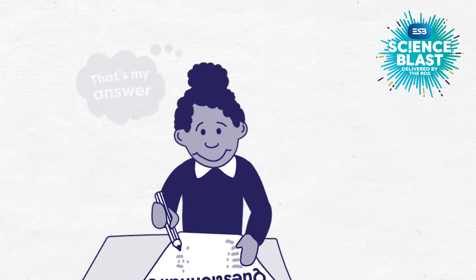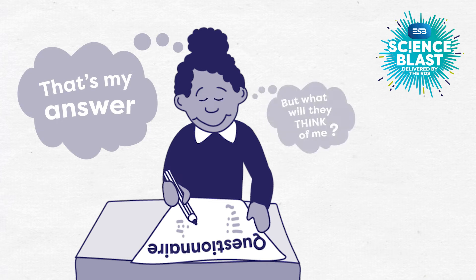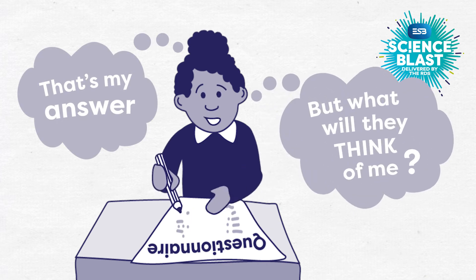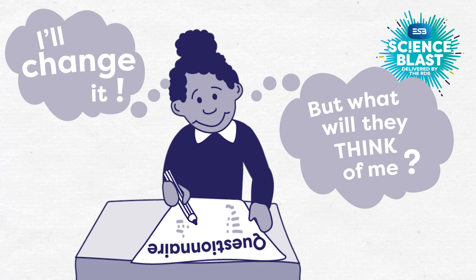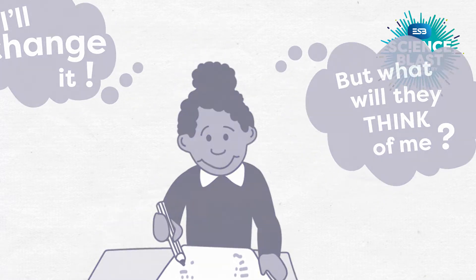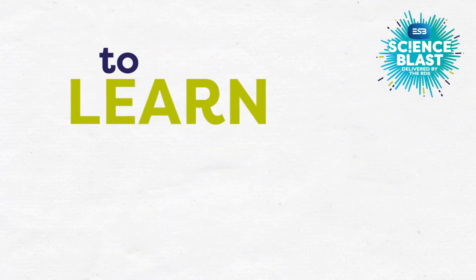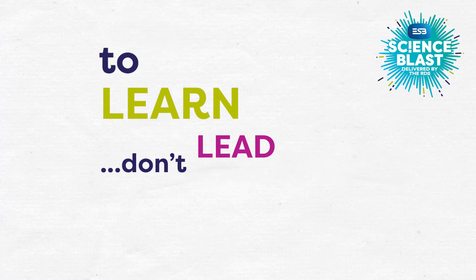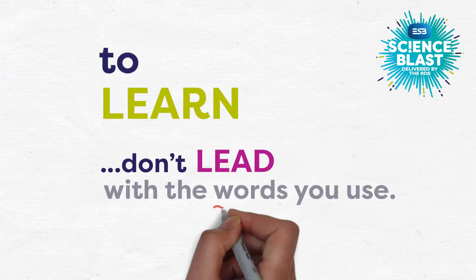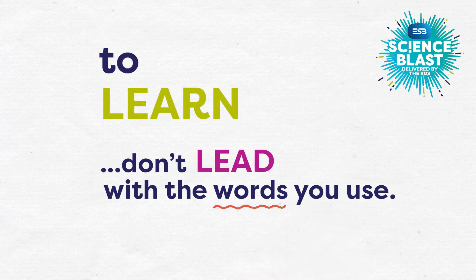The thing about us humans is that we tend to care quite a lot about what other people think, even if we don't want to admit it. And scientists know that this can often change how we answer questions in surveys. So in order to learn from a survey, we need to be sure you don't accidentally lead or influence people with the words you use in the questions.